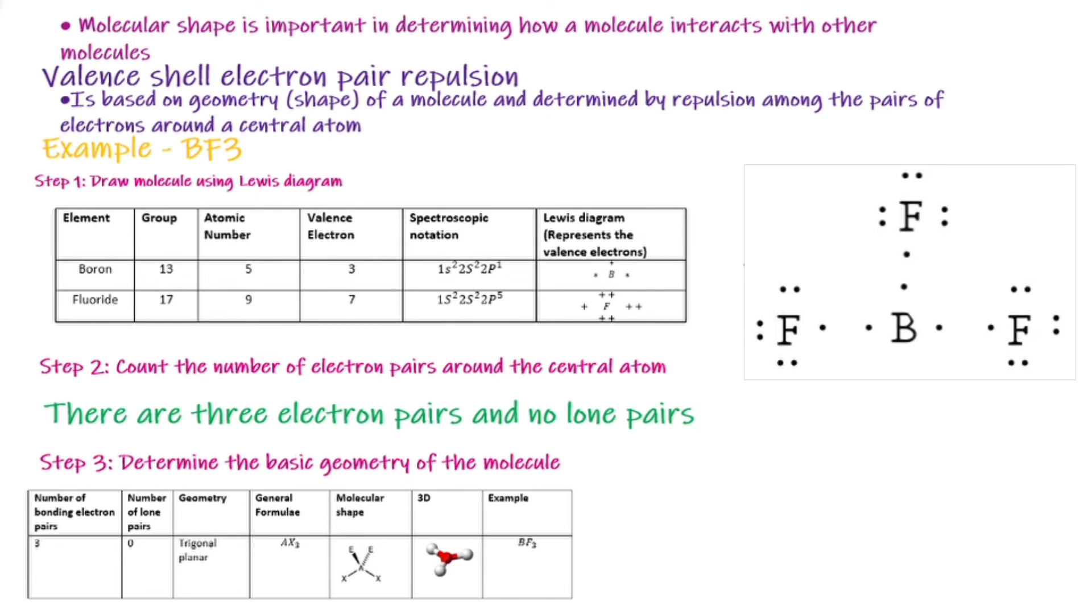With a general structure of AX₃, with A being boron and X being our fluoride. You can also explore the molecular shape and the 3D structure. I really hope this makes sense. Thank you so much for watching.